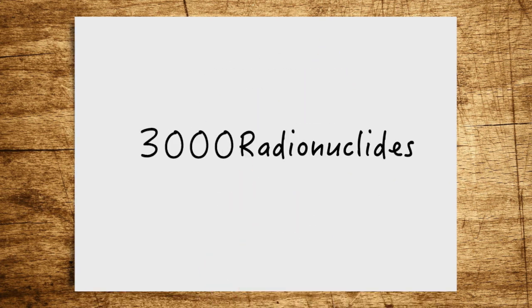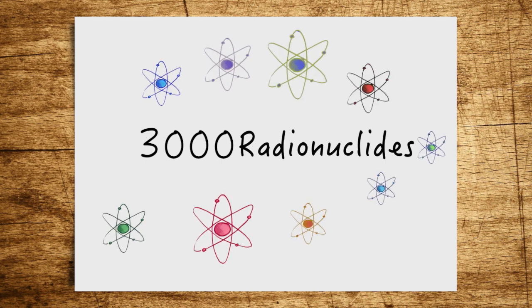By the way, there are more than 3,000 different radionuclides known to this day. These can be described by different properties or be divided into different groups of types.